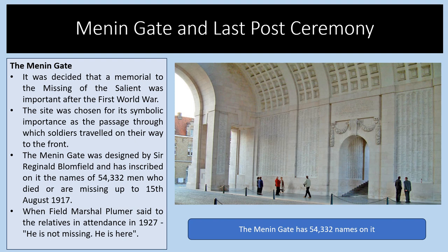The Menin Gate was declared a memorial to the missing of the Salient. The site was chosen for its symbolic importance as the passage through which soldiers travelled to the front. Designed by Sir Reginald Blomfield, it is inscribed with the names of 54,332 men who died or are missing up to the 15th of August 1917. When Field Marshal Plumer spoke at the dedication in 1927, he said: 'He is not missing — he is here.' This is an important way for people to remember their loved ones who died in the First World War.